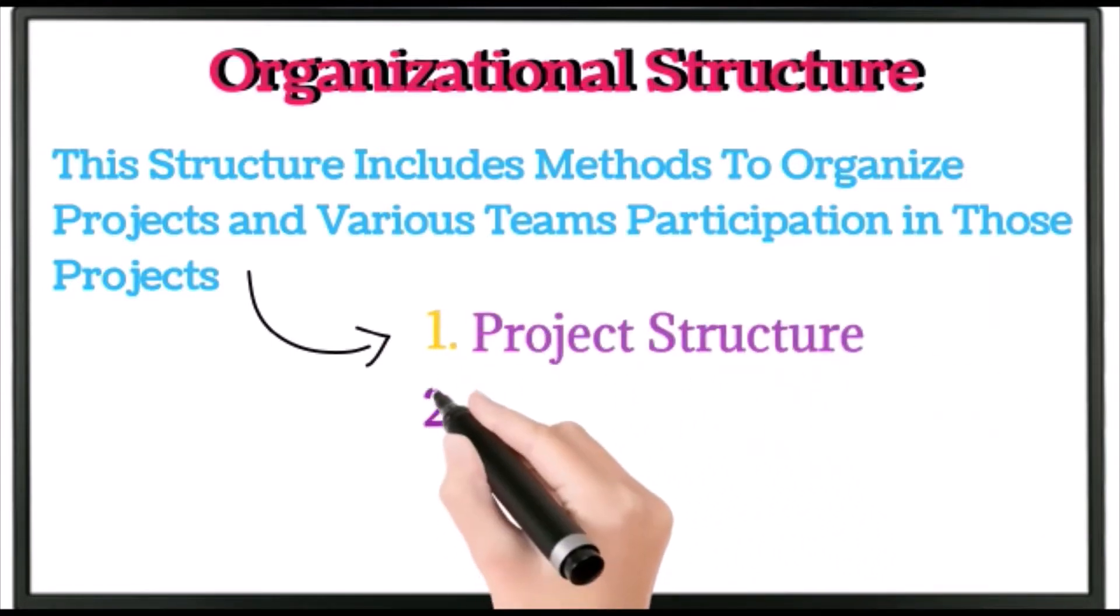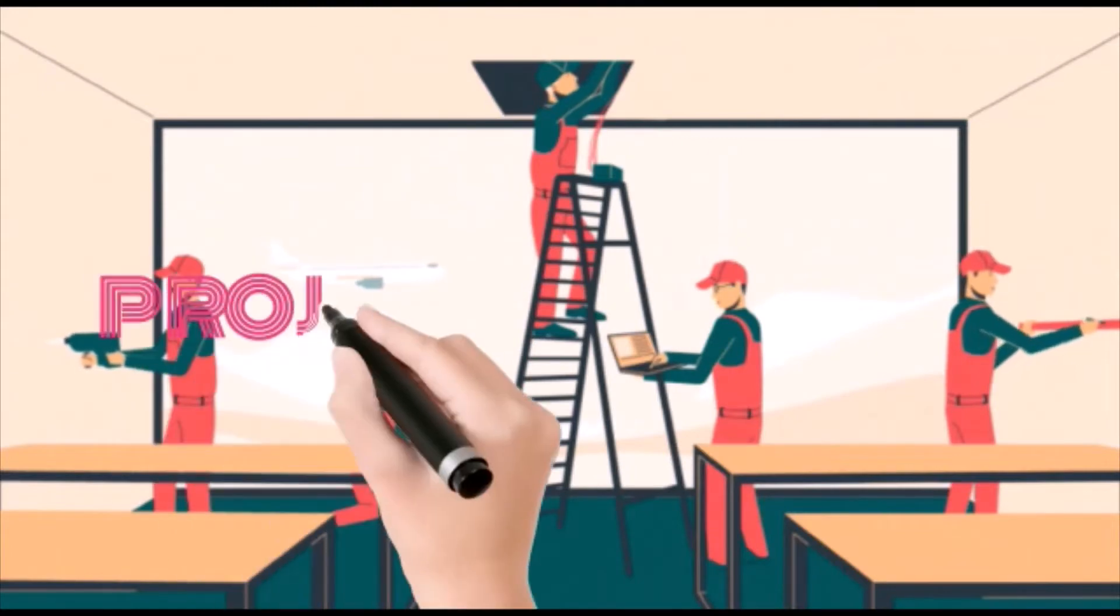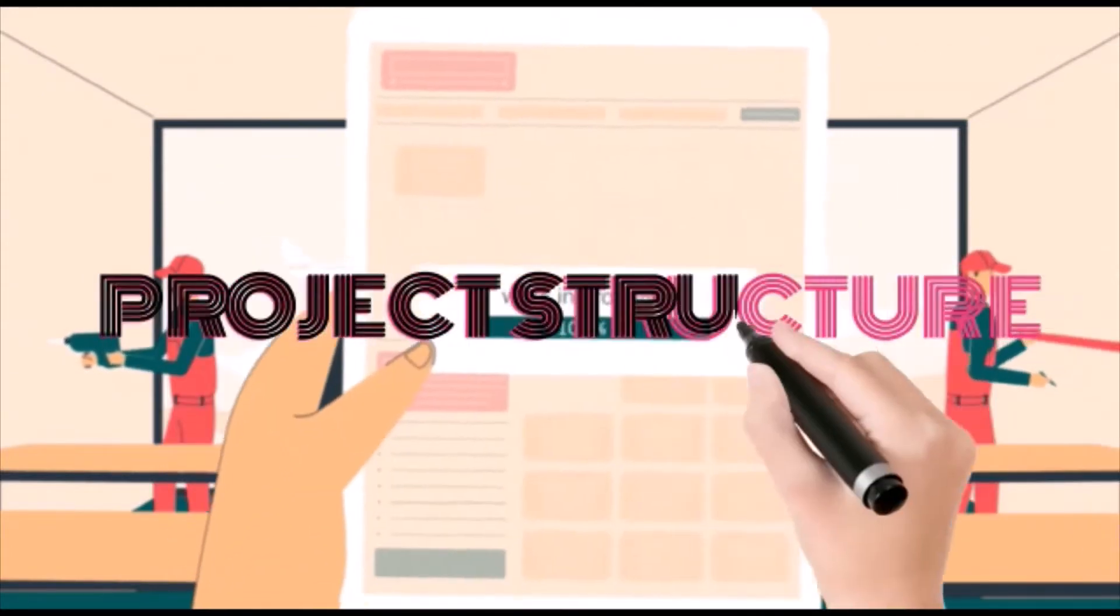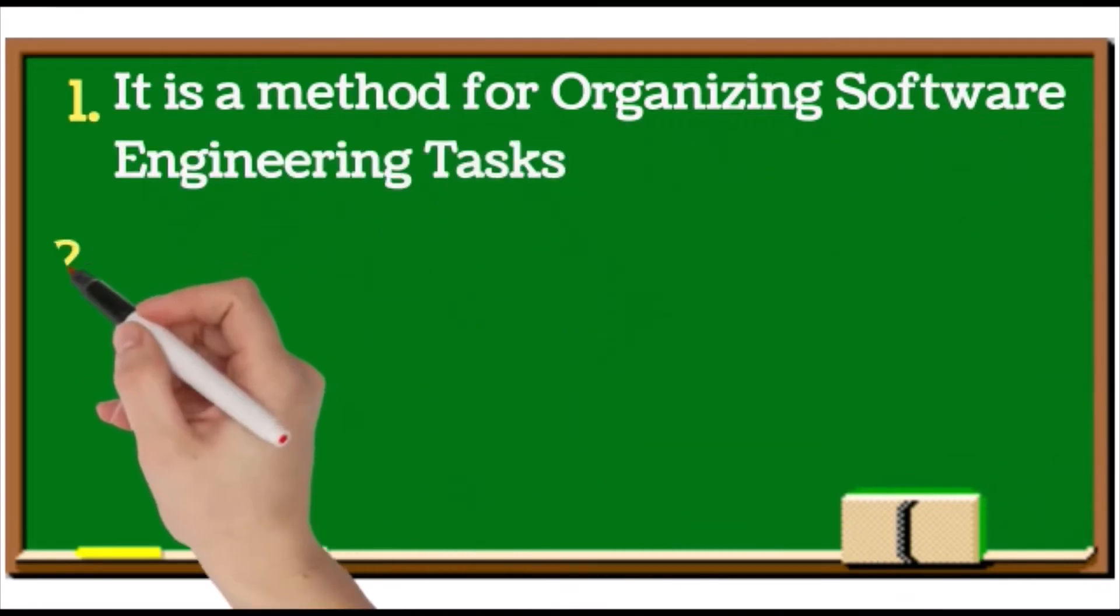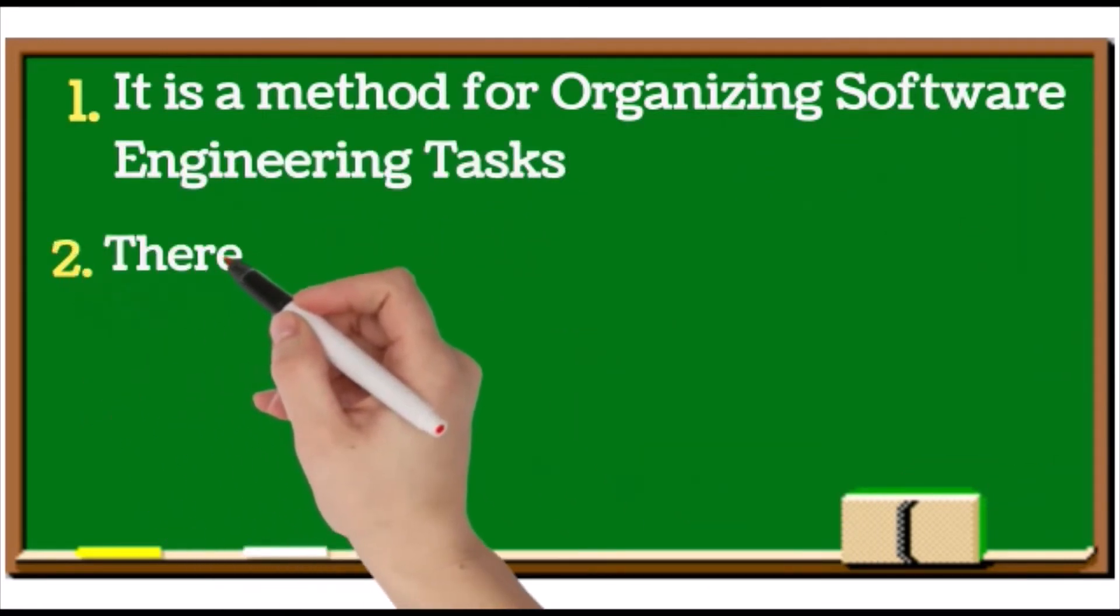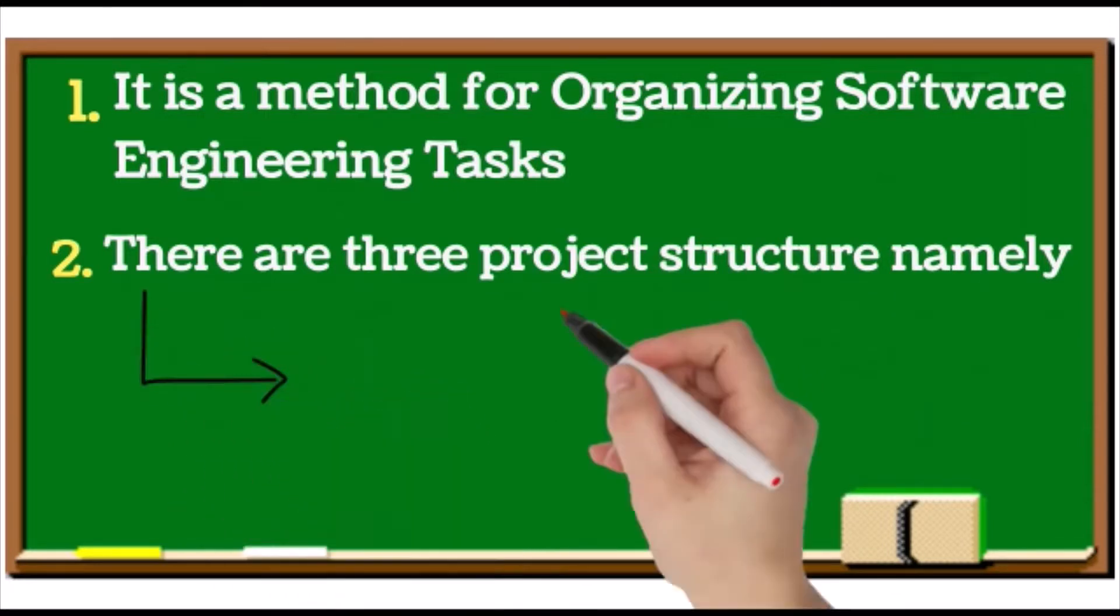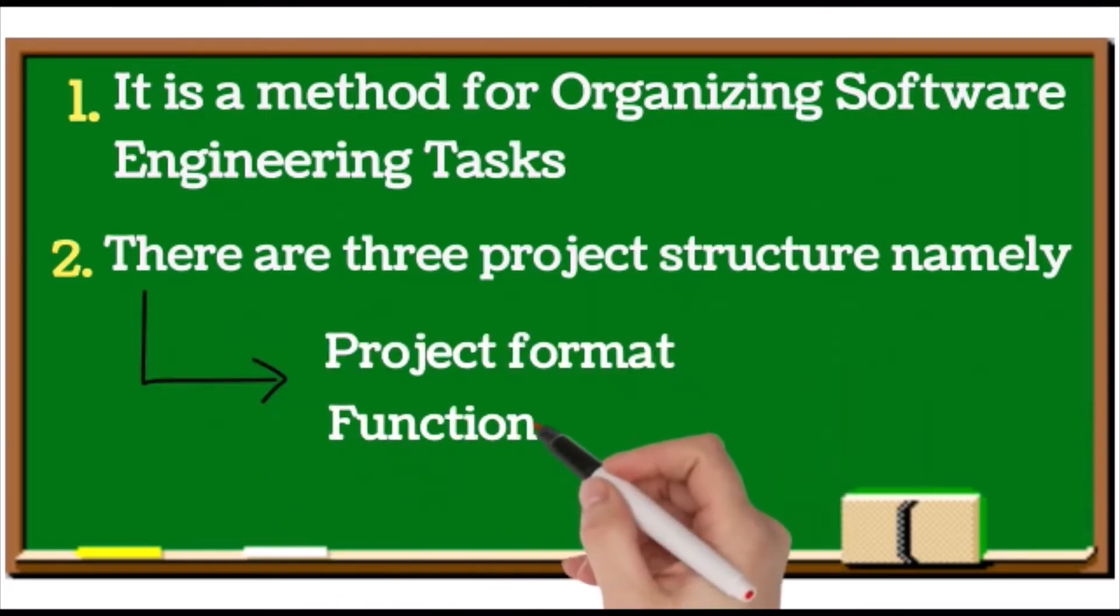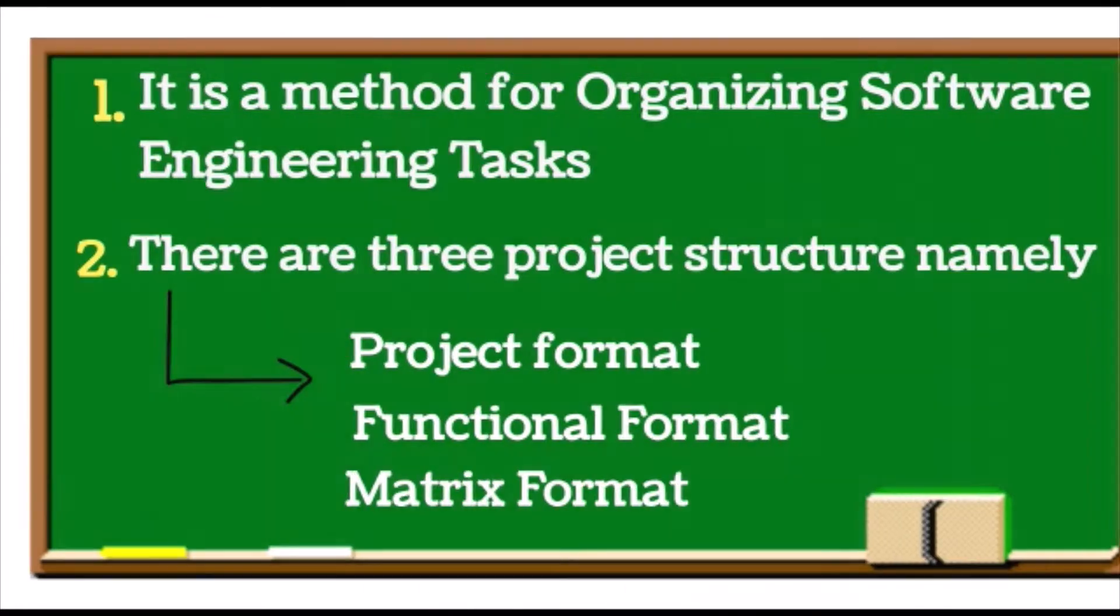For planning, namely project structure and team structure. First, we are going to see about project structure. It is a method of organizing software engineering tasks. There are three project structures: project format, functional format, and matrix format.